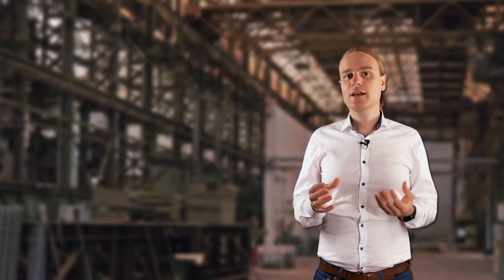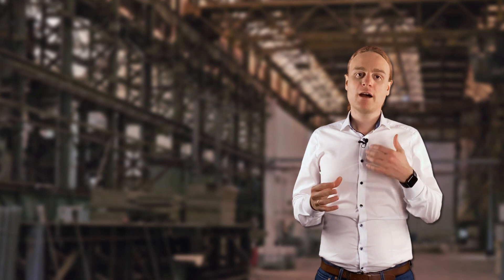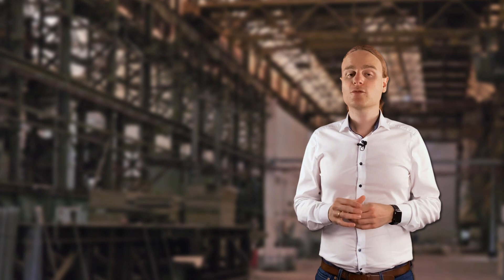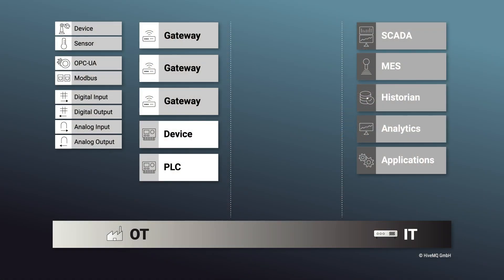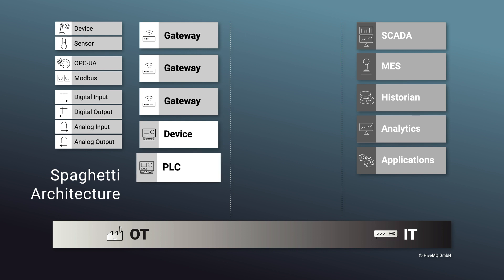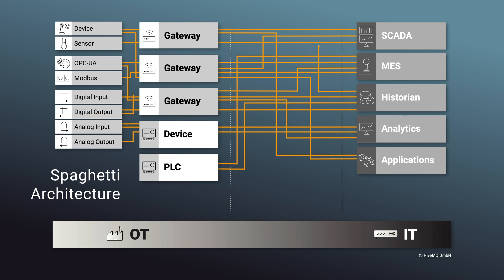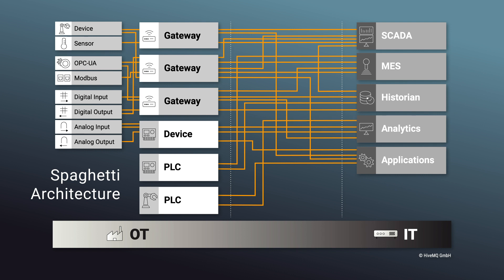Before we go into the Sparkplug architecture, let's take a look at a very traditional, probably OPC UA based or other protocol based architecture, which you will find today in a lot of factories and shop floors. As you can see in this picture, we have what we call a spaghetti architecture. A lot of the components — PLCs, gateways, machines, applications, SCADA systems, historians — are usually connected point to point. If you're adding a new PLC to your deployment, you need to make a point-to-point connection to your respective systems, resulting in something very hard to maintain. This is because a lot of these deployments use a so-called poll-response architecture, which we will also talk about in detail in later parts of this series.